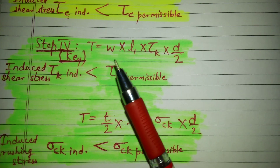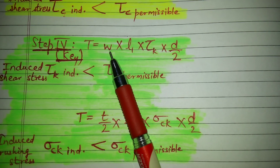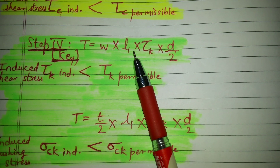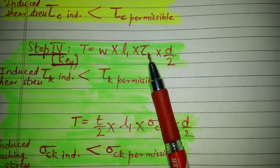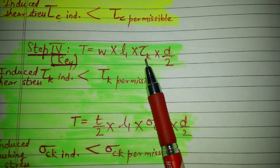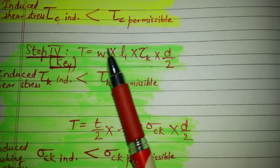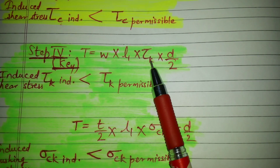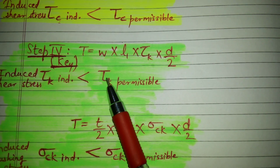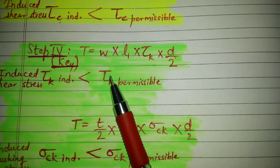For key stresses, torque equals width of key W into length of key L1 into induced shear stress in the key, multiplied by D divided by 2. With this formula we find the induced shear stress in the key, which should be less than the permissible shear stress for the key.